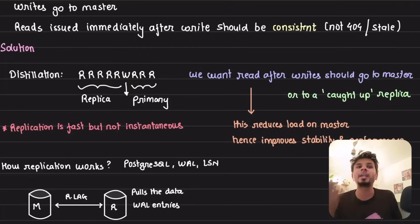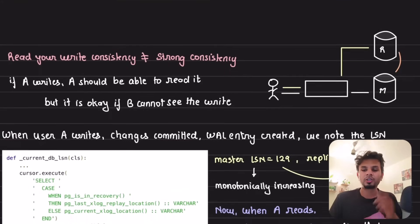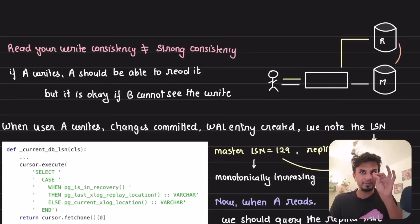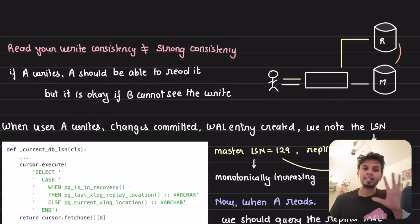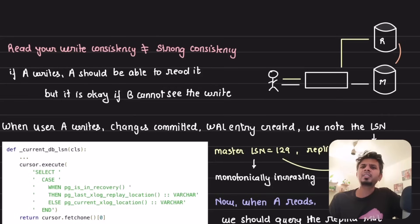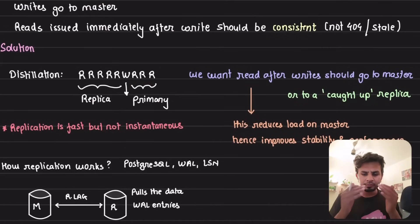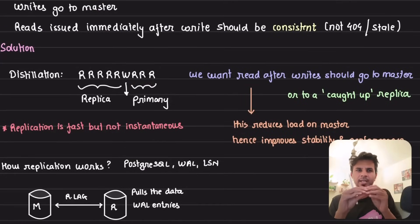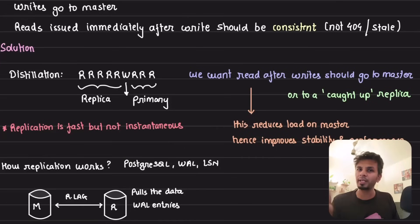Remember, this is read-your-write consistency, not strong consistency — there is a difference. Strong consistency means whatever I've written, if me or anybody else reads it, they get the most recent value. Read-your-write consistency is more relaxed: whatever I have written and if I read it, I get the latest value, but if someone else reads it, it's okay if they get a stale value or see it as non-existent.